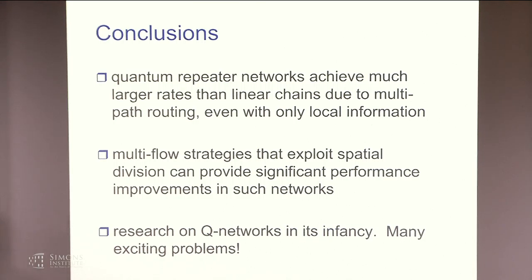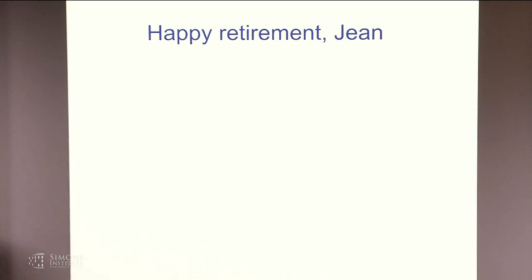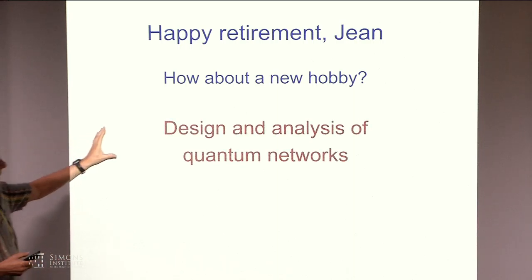So the conclusions of quantum repeater networks achieve a much better performance than linear chains, even just for a single pair of users. And even if you just use local information and with multi flows, it looks like you should exploit spatial information. And I'll just say that the research here is really in its infancy and that I think there are just many exciting problems. And what I'd like to leave to you, John, this retirement celebration is do you need a new hobby? And if you do, why don't you think of doing this? And then I can move on to another research topic. That brings me to the end. Thanks.